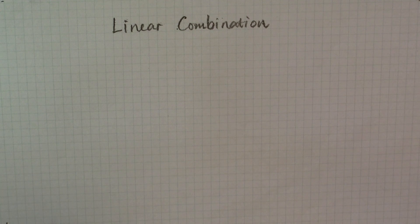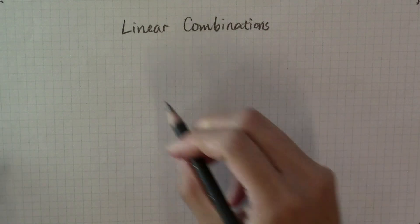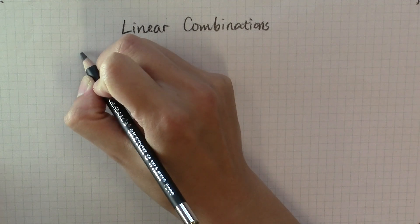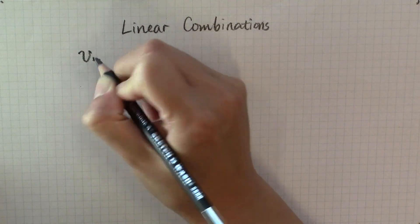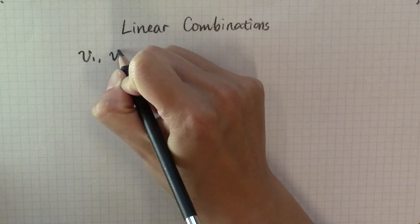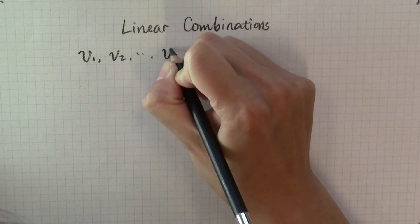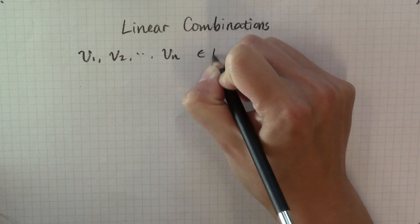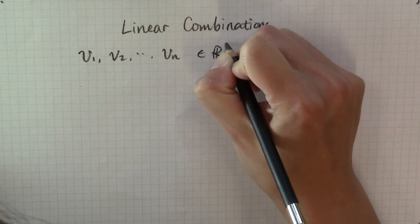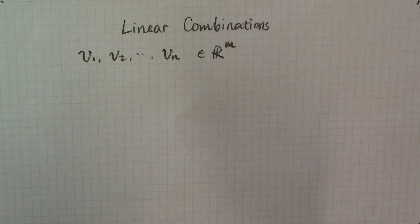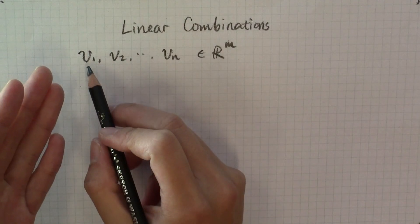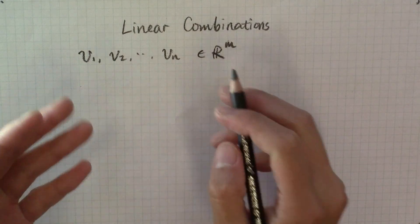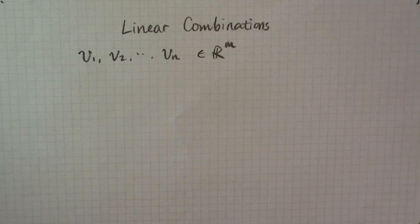In this video, we'll talk about the idea of a linear combination. Suppose we have some vectors v1, v2, etc., vn, that are in the vector space R^m. A linear combination of these vectors is a simple idea.